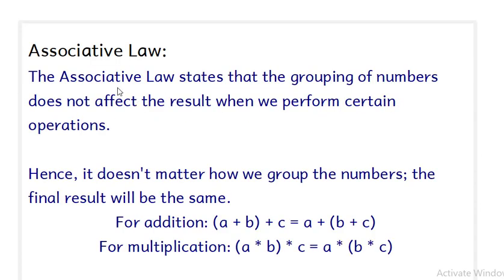So what is associative law? This law states that the grouping of numbers does not affect the result when we perform certain operations. For example, if we have three numbers A, B and C, we are adding A and B first and then that sum is added with C. If we do B and C first and add it with A afterwards, we will get the same result.